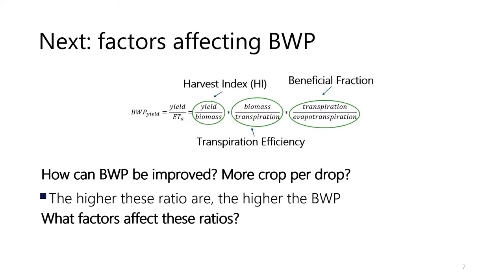In this introduction video, we have looked at the definition of biophysical water productivity. We distinguished between the biomass and the yield water productivity, and we identified three important agronomic concepts related to physiological plant processes: the harvest index, the transpiration efficiency, and the beneficial fraction.